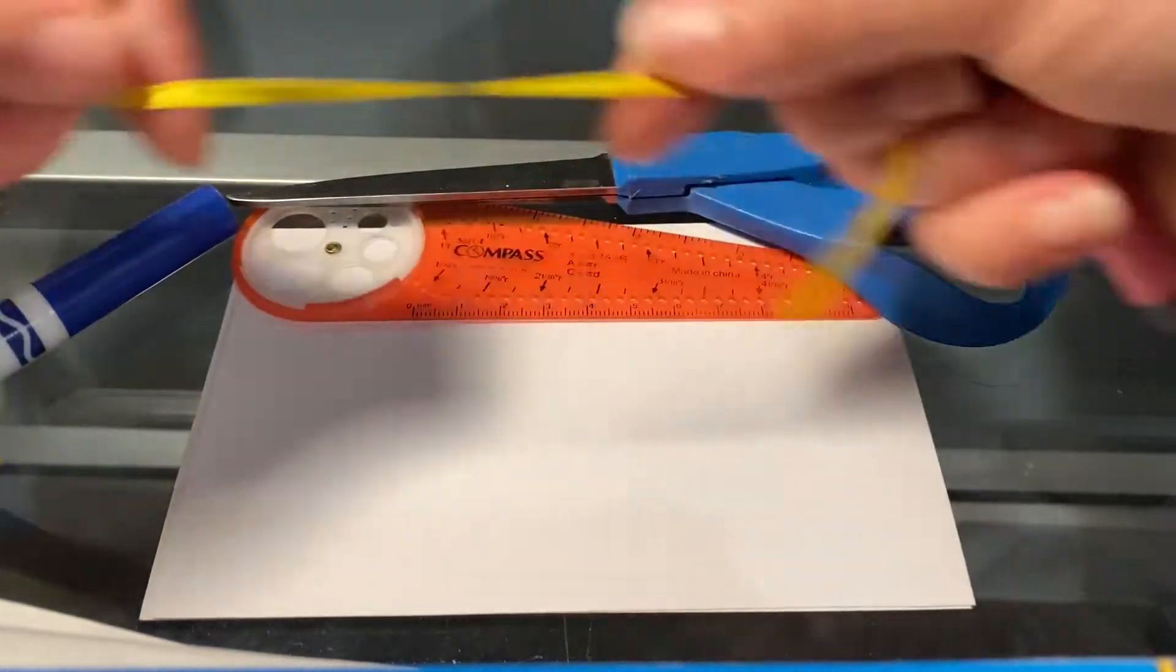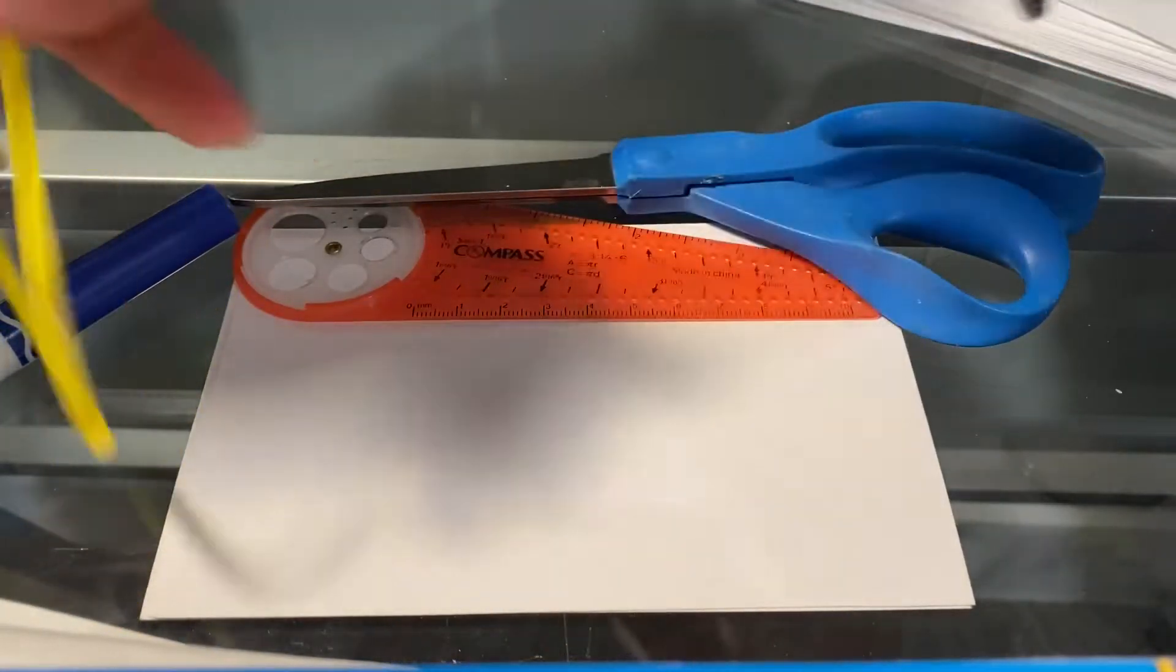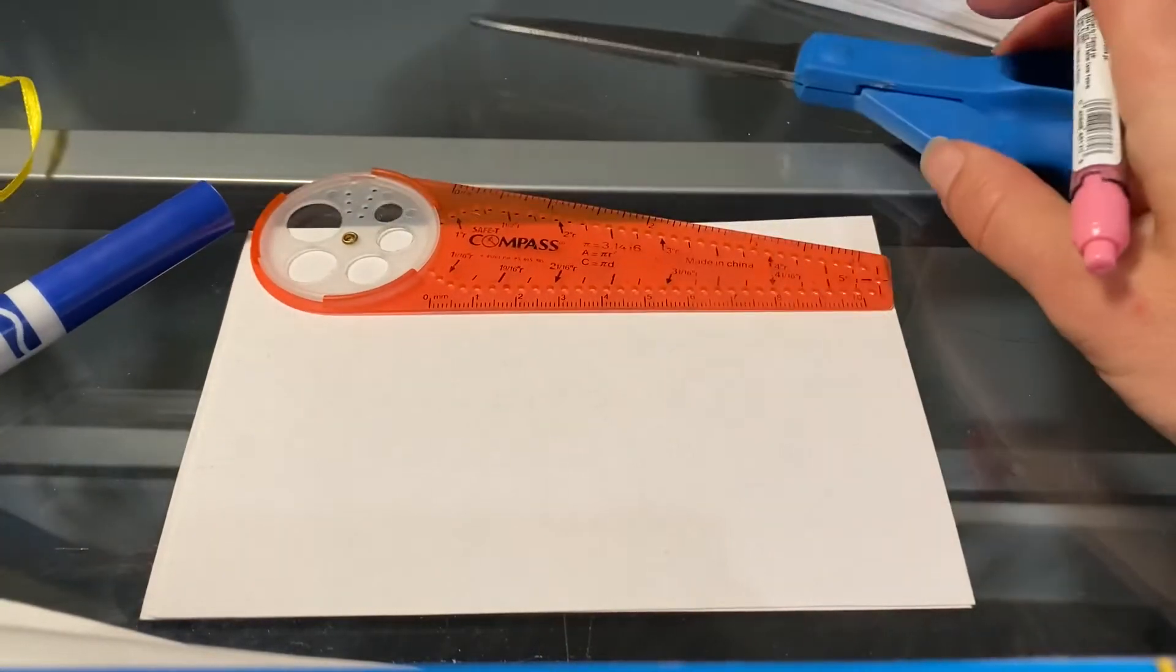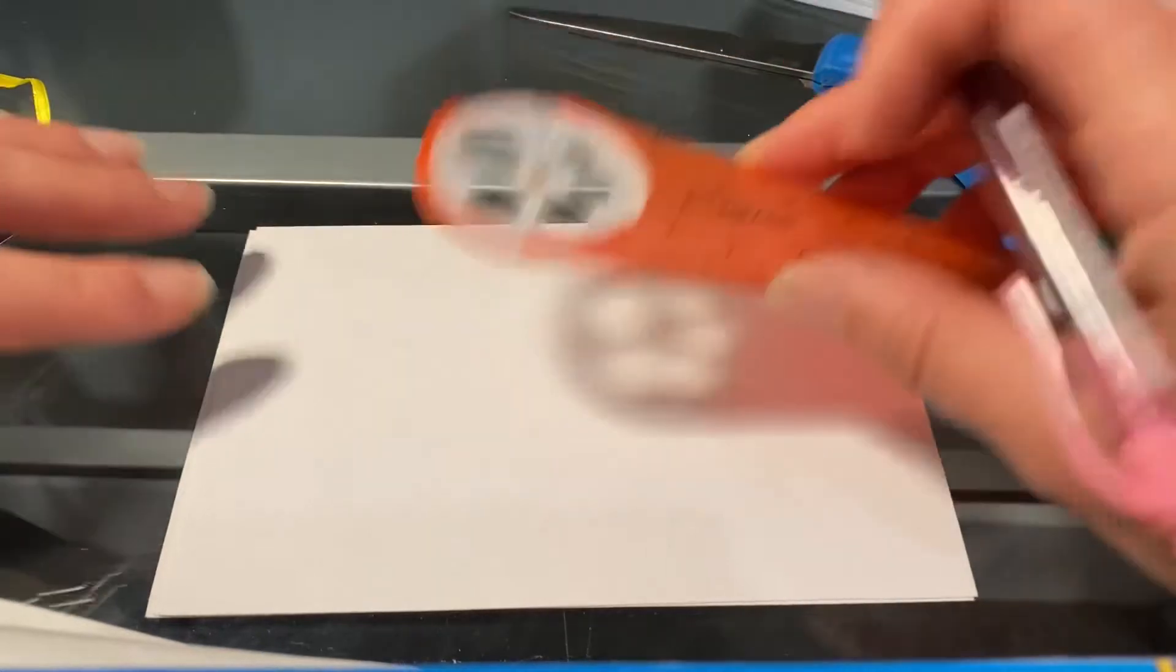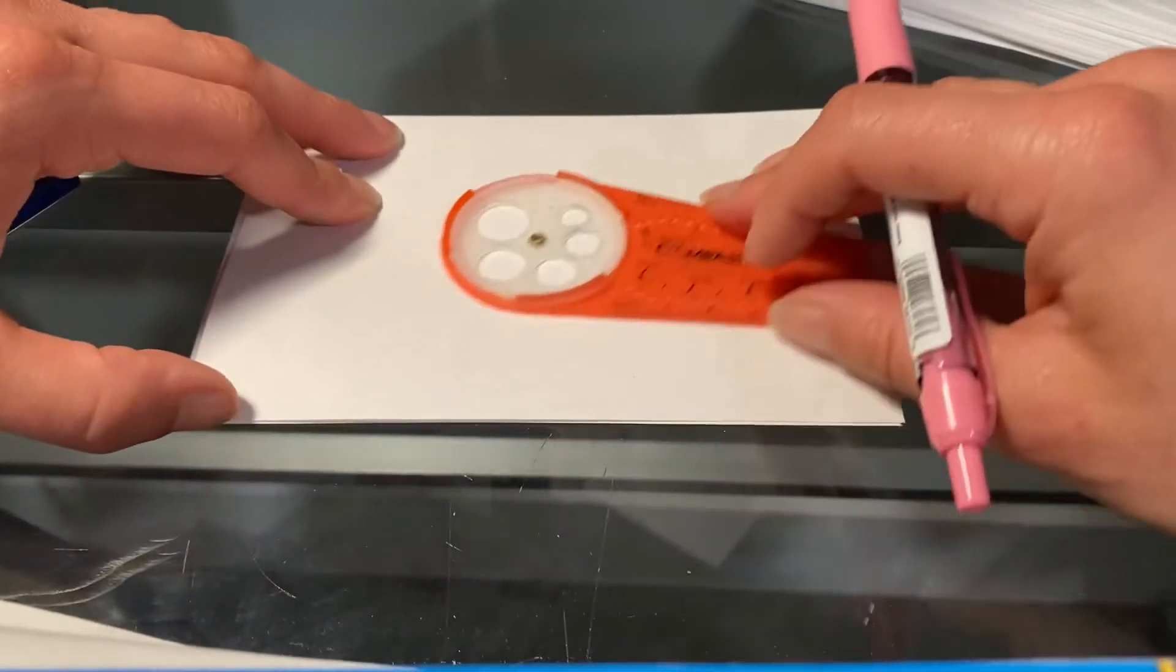And then you will need a piece of string about three feet long. This is a little short. This is all I had at home, but use that white string there in the classroom. All right, so the first step, once you get your compass, is you are going to draw a large circle.